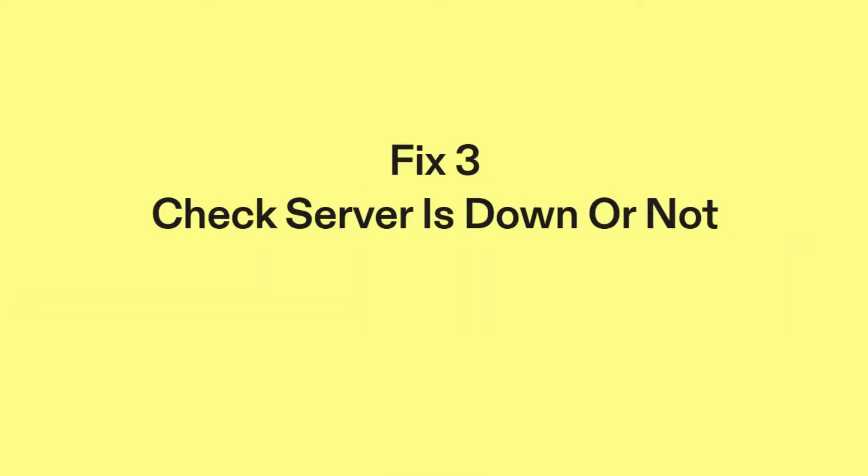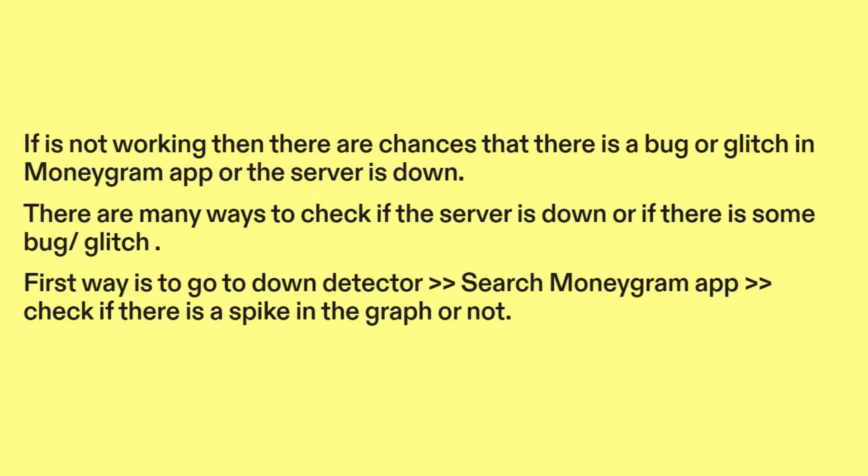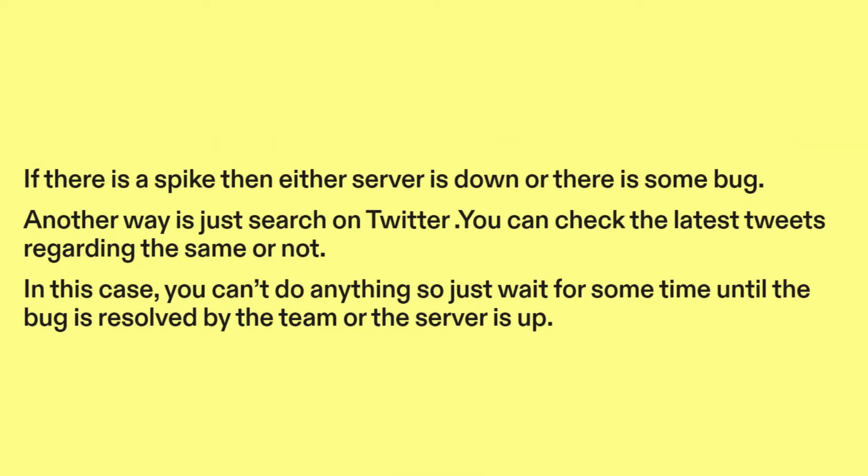Fix three: check if the server is down or not. If it's not working, then there are chances that there is a bug or glitch in the MoneyGram app or the server is down. There are many ways to check this. First, go to Downdetector and search for MoneyGram app, then check if there is a spike in the graph or not. If there is a spike, then either the server is down or there is some bug.